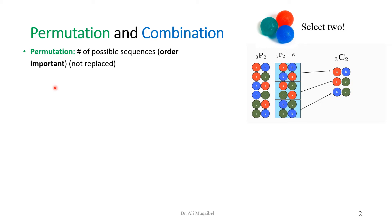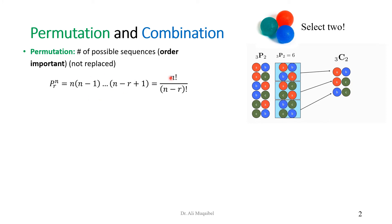We can come up with an equation for permutations. To pick the first ball you have n possibilities, where n is the total number. To pick the second ball, since one is already out, we have n minus one, and so on. So we have n times (n minus 1) until we get down to r selections. This mathematically can be written as n factorial divided by (n minus r) factorial, where n is the total number and r is the number of drawn balls or items.